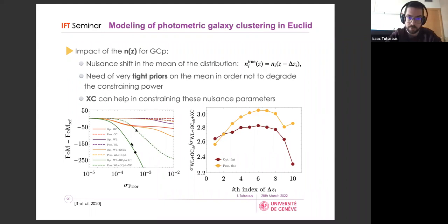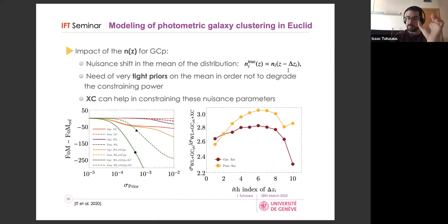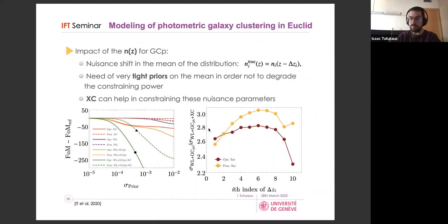Galaxy-galaxy lensing can also help constrain these photo-z shift nuisance parameters — there's a factor of ~3 improvement in the uncertainties on these parameters when adding galaxy-galaxy lensing. This further motivates the 3×2pt approach: it not only improves cosmological constraints but also helps mitigate photometric redshift systematic effects.